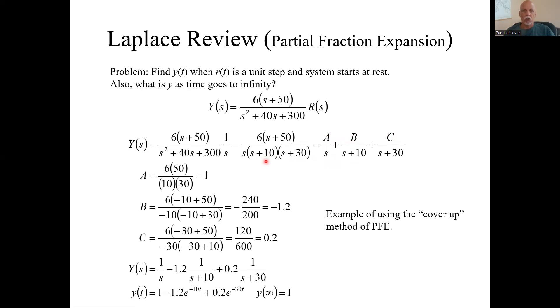Now we need to find the A, B, and C. And since these are all simple, real roots, we can use the cover up method for each one of them. So cover up the s here. Then evaluate the rest at s equals 0. Whatever makes the denominator 0. So it'll be 50 over 10 times 30. Just one. That's what A equals.